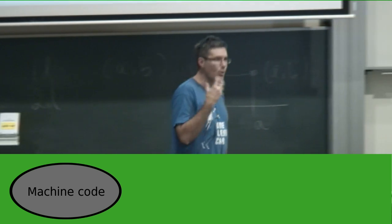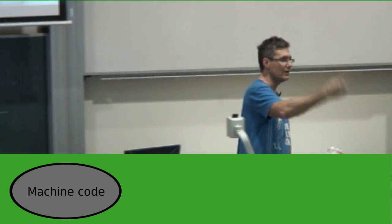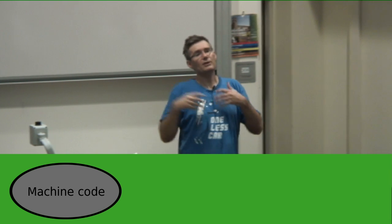So machine code is like one level of abstraction. At one level, the computer is executing machine code. But you saw how hard it was to even write a program to add two numbers together. It's just a whole lot of gibberish in numbers.